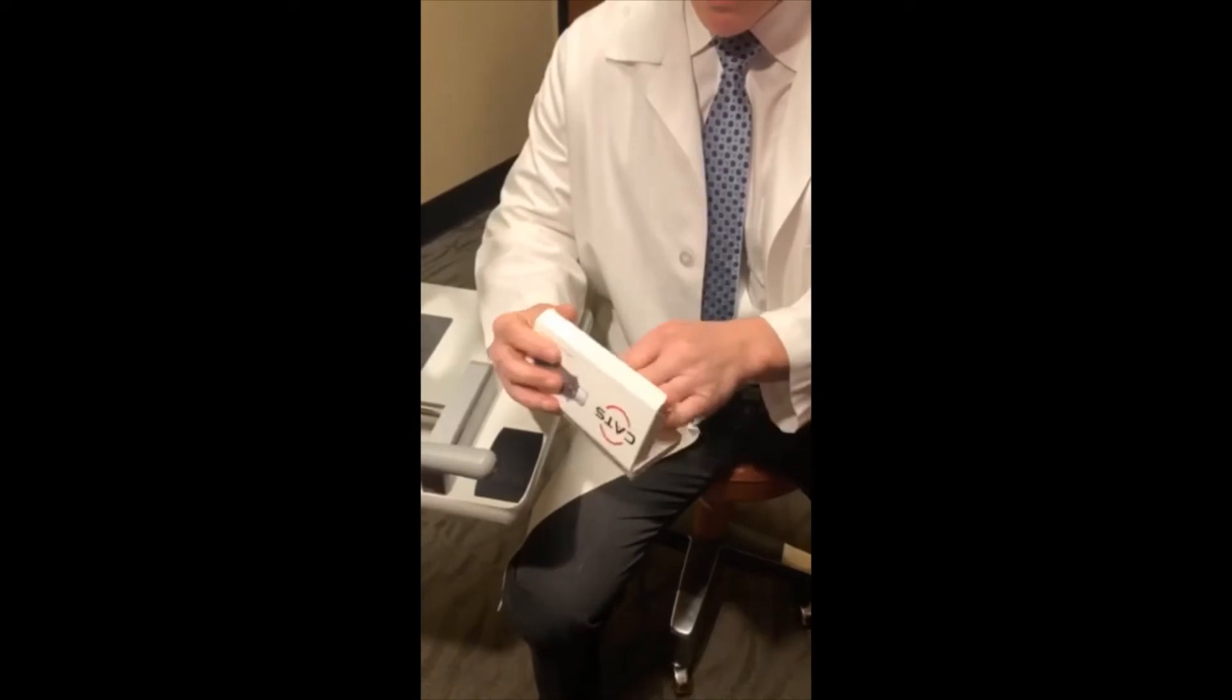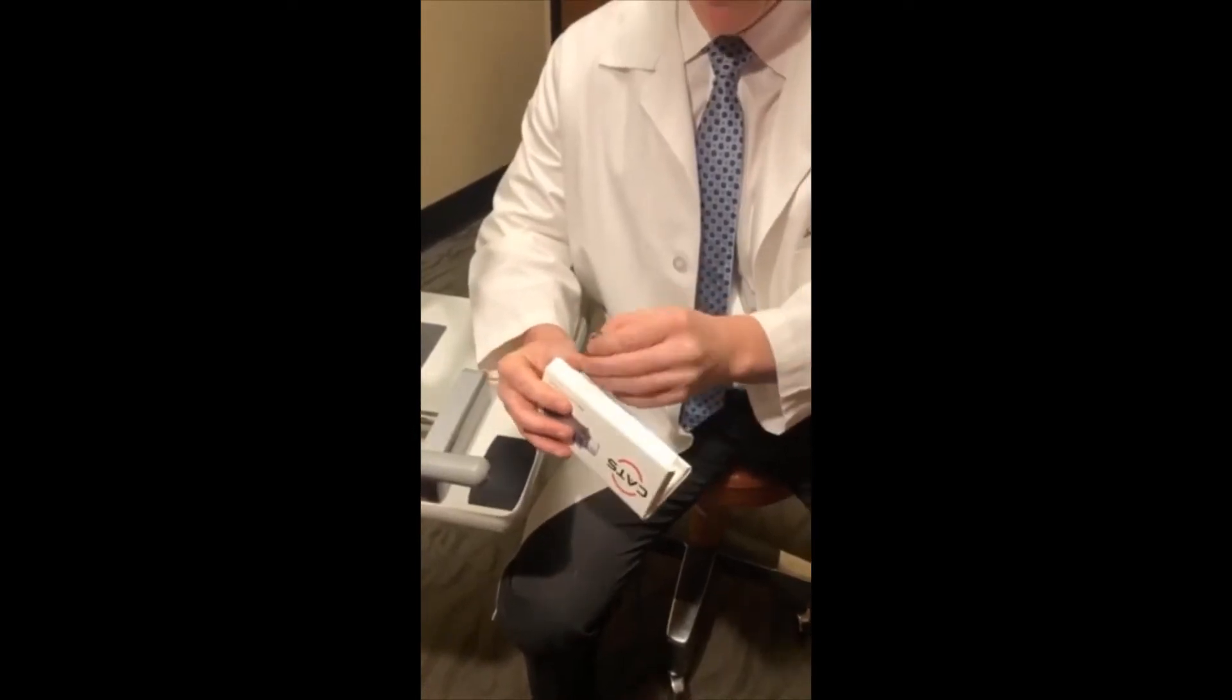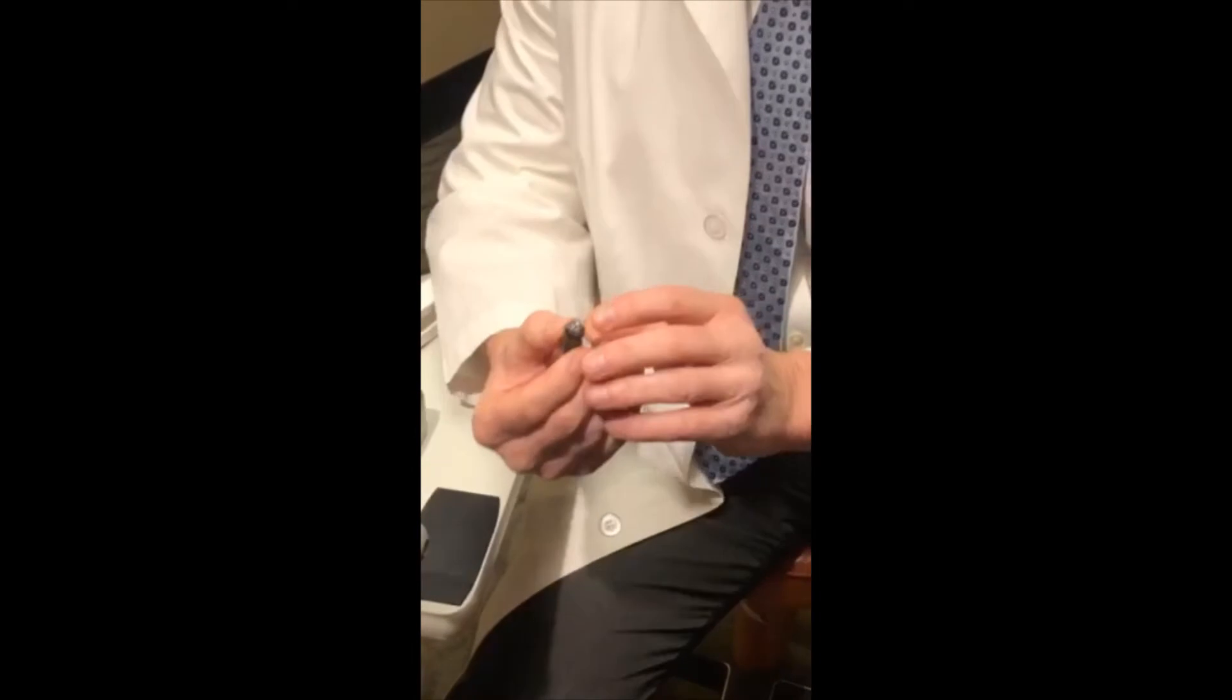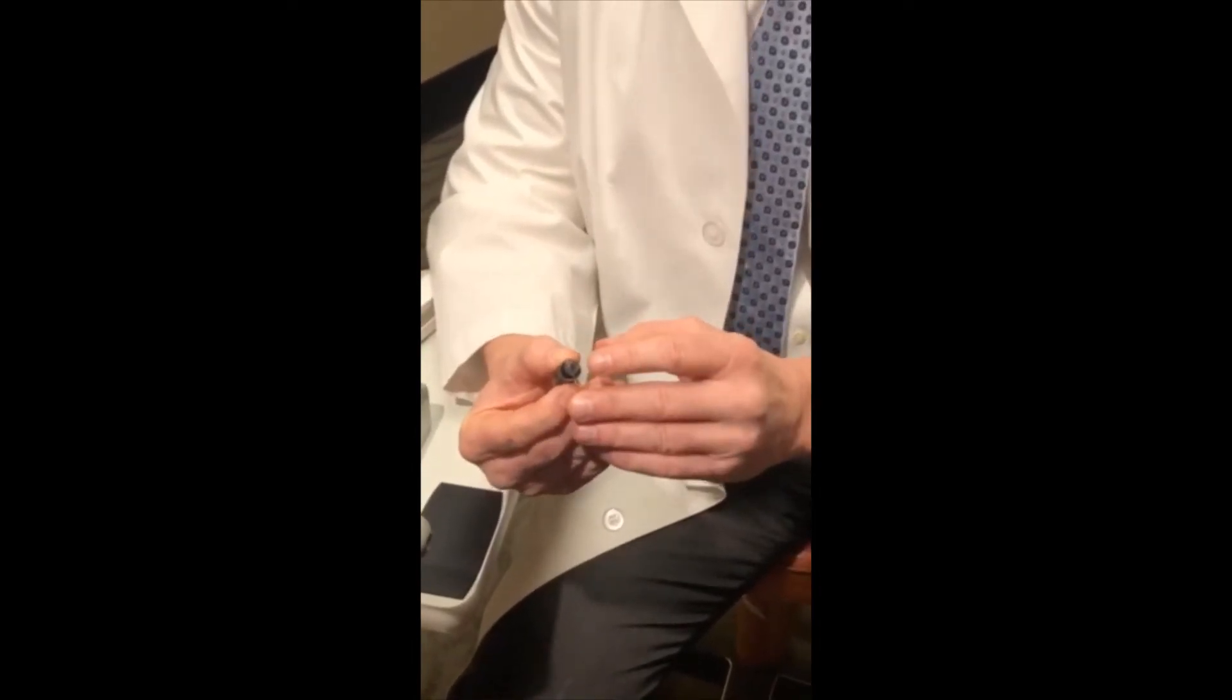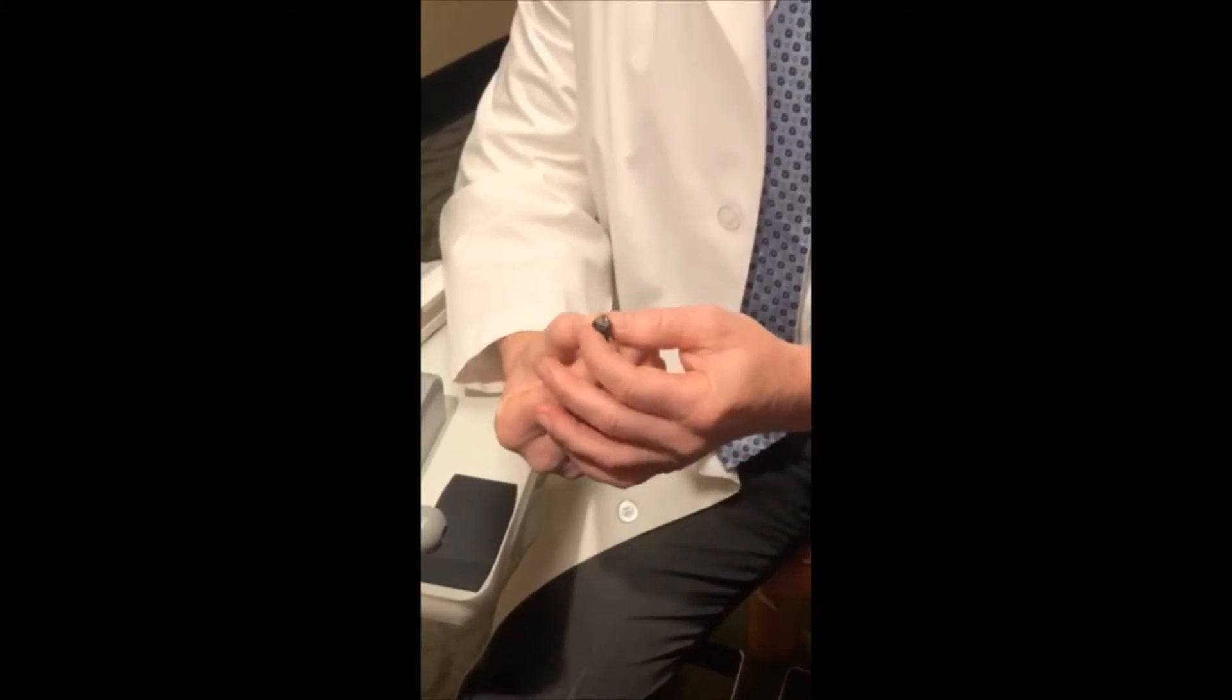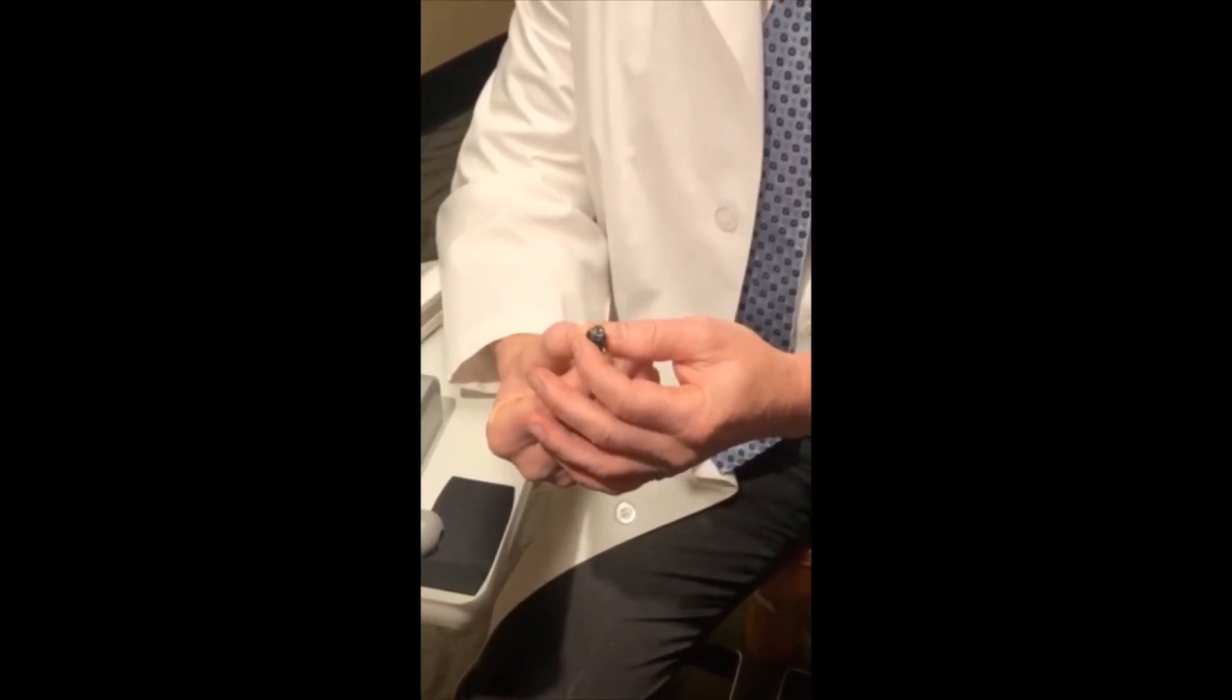When you open the box and examine the prism, you notice that it looks different. But mainly, you'll notice that the biggest difference is it no longer has a flat applanating surface. It has a slight dimple in the center. This is what allows the accuracy of the CATS tonometer prism in measuring pressure.